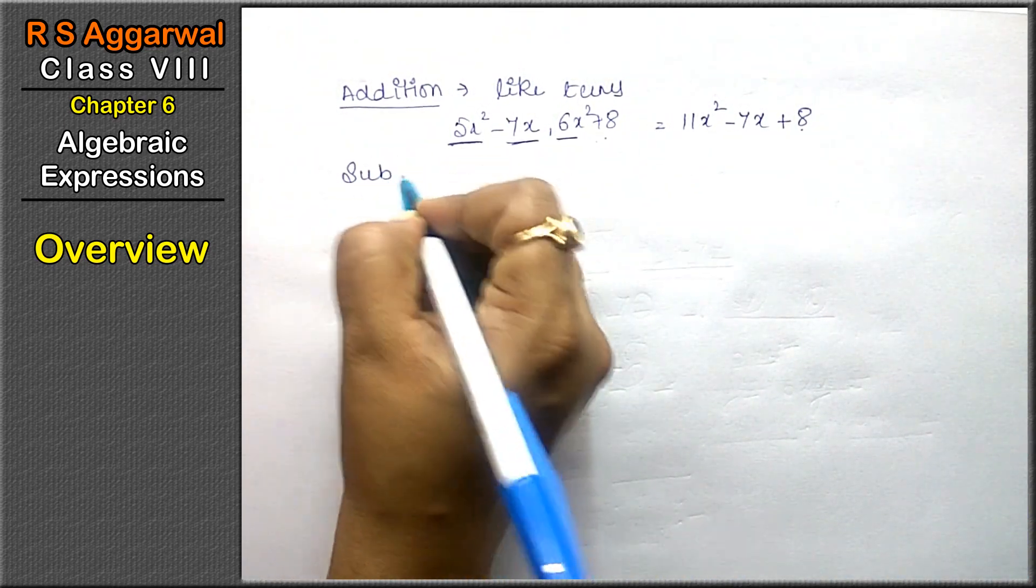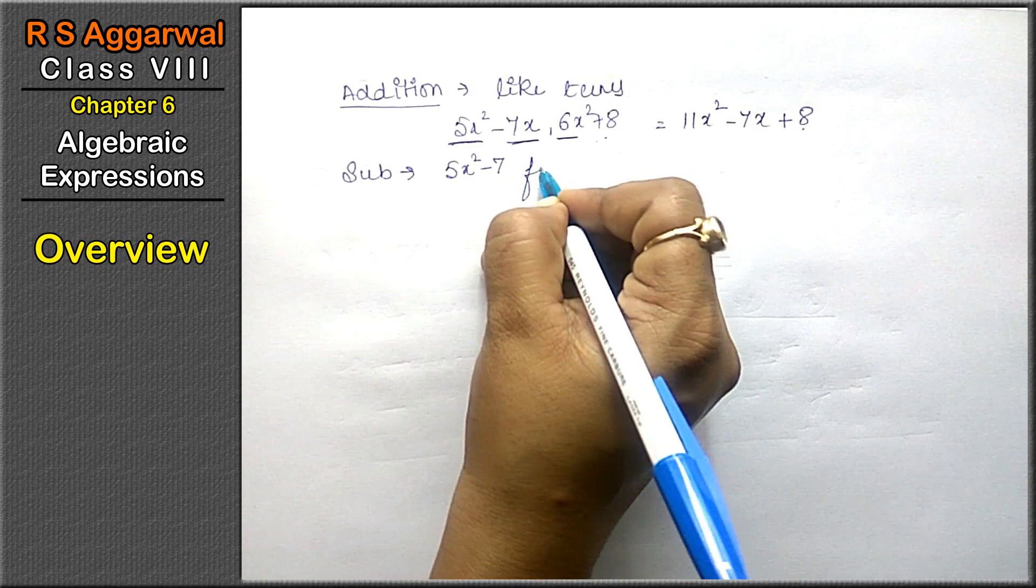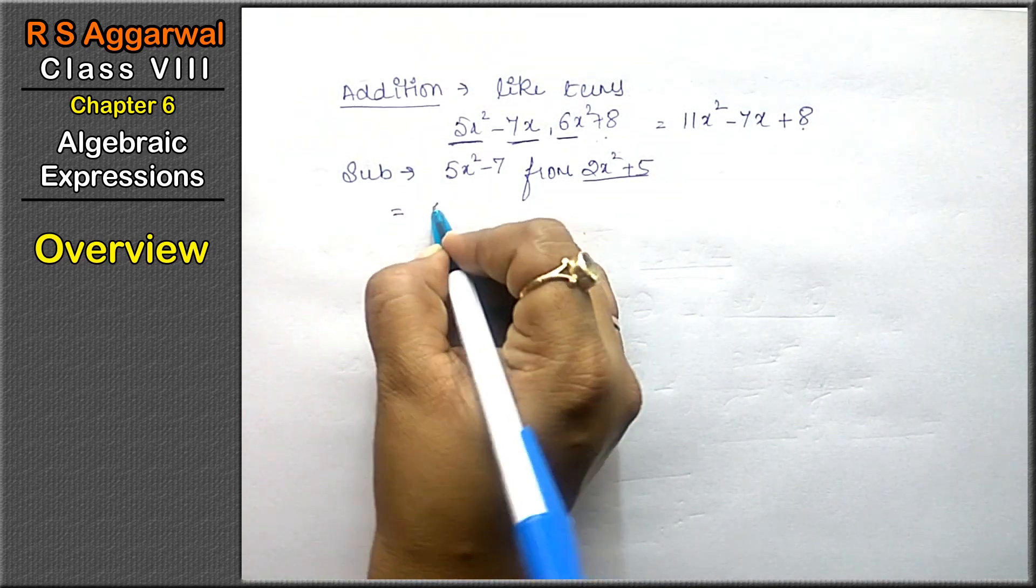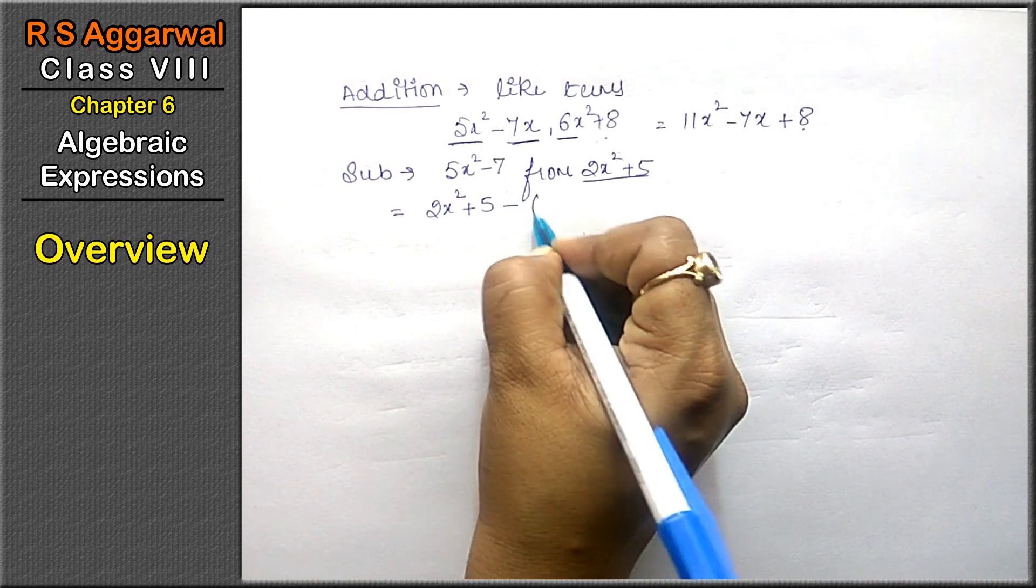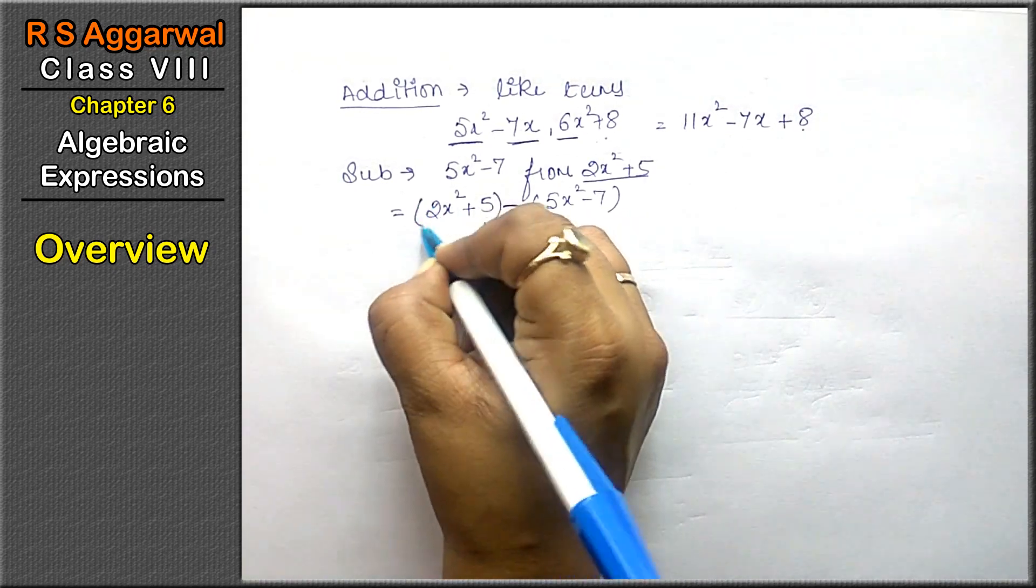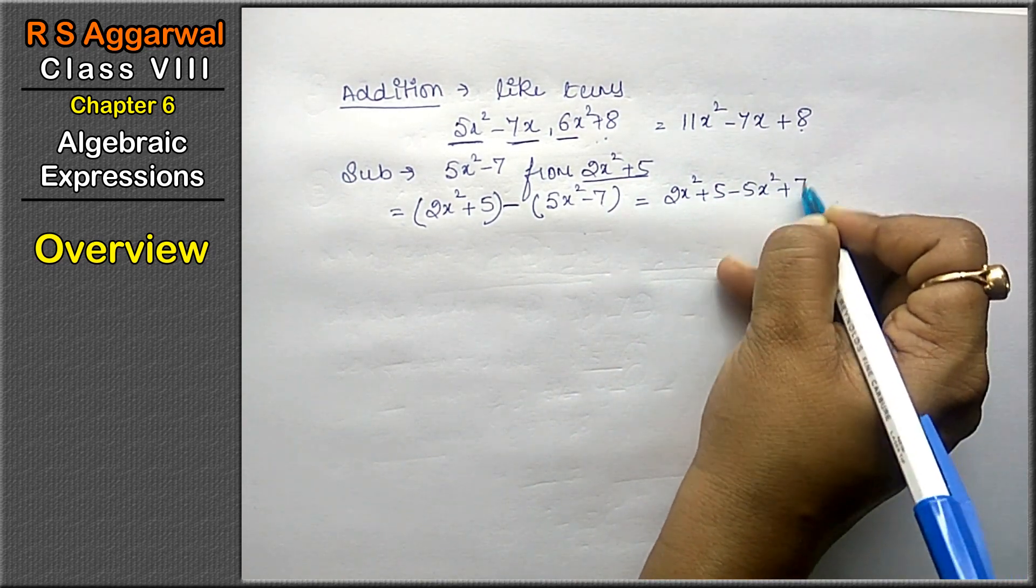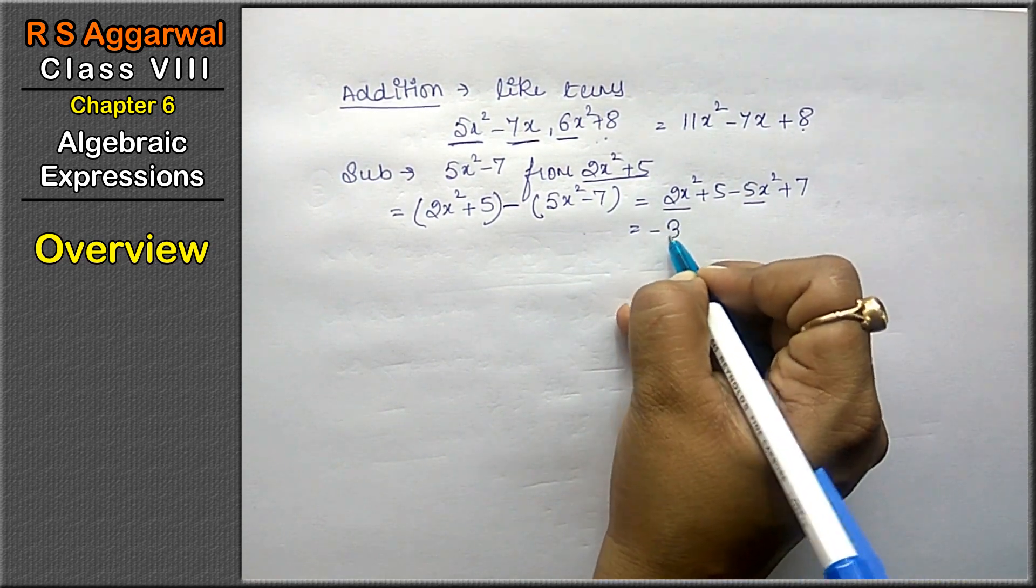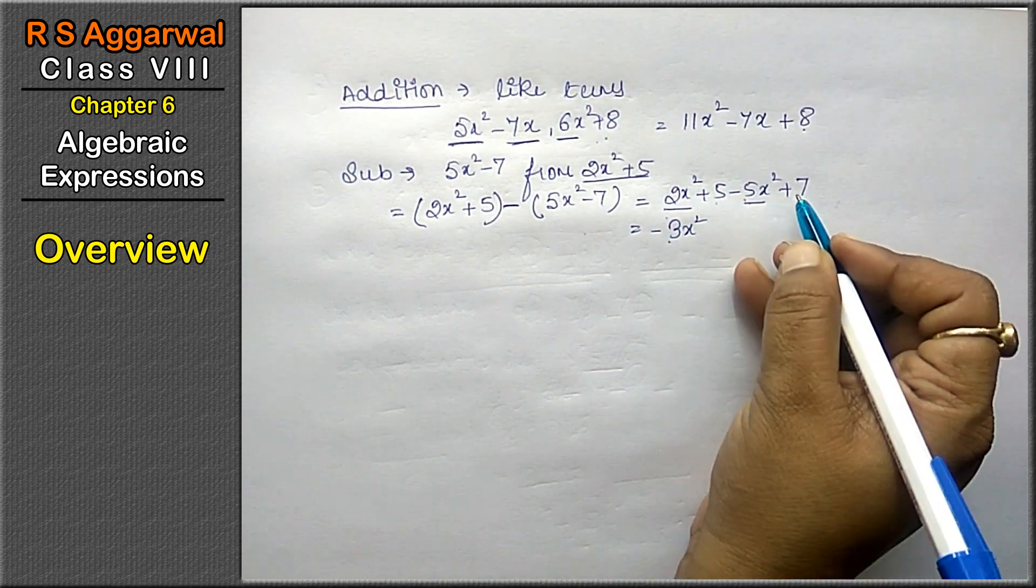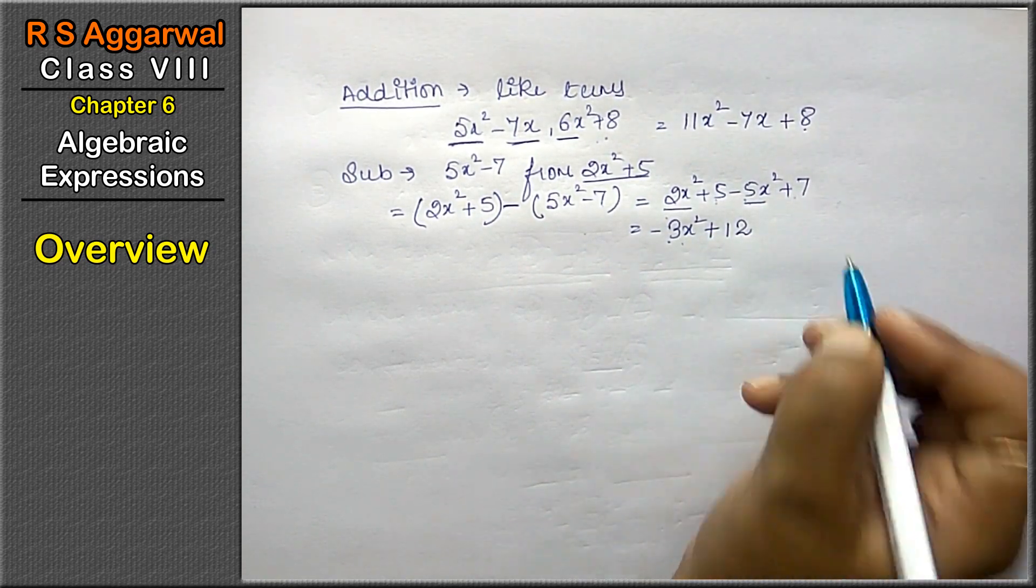Now subtraction. In the case of subtraction, if I say subtract 5x² - 7 from 2x² + 5. Friends, this term we already know comes first, and then the latter comes. But we have to subtract, so this minus sign is applied, and we open the brackets, 5x² + 7. Now, x² and x² terms together, -3x² because this is +2 and this is -5. Opposite signs, so we subtract. +5 plus, both have plus signs, so they add together. 5 + 7 is 12. This will be the answer.